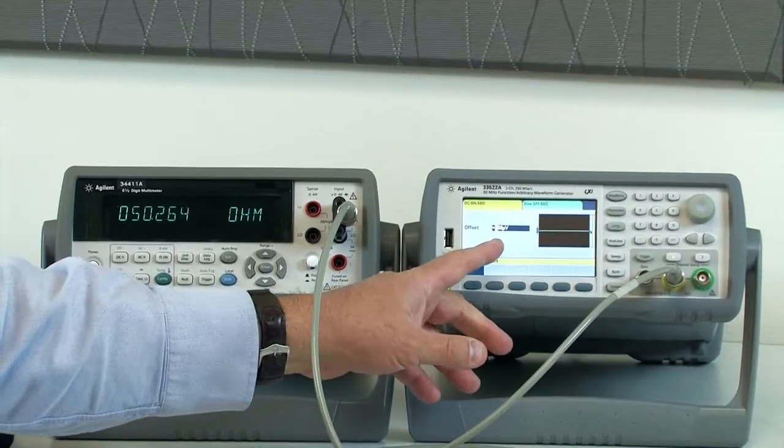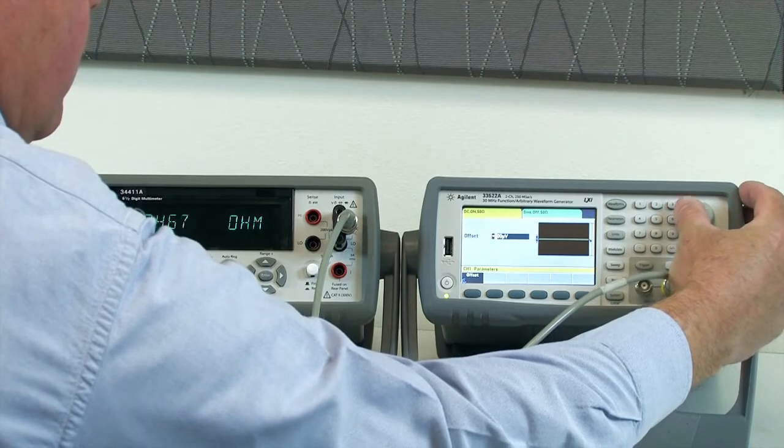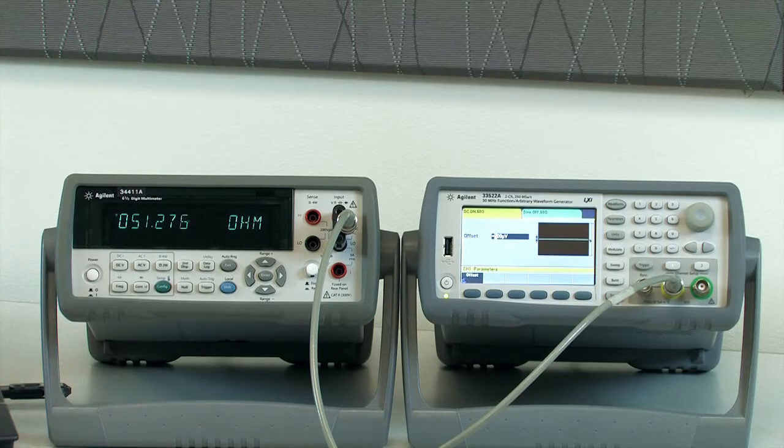However, when I add a little bit of offset voltage to the function generator, we'll watch as the ohms measurement goes in error because of these stray voltages.